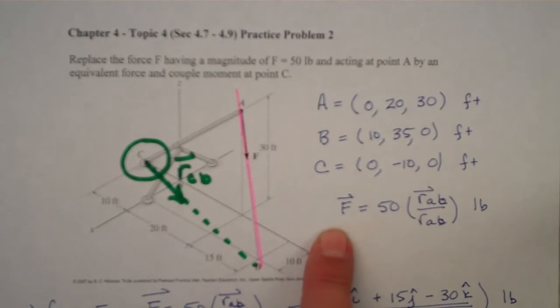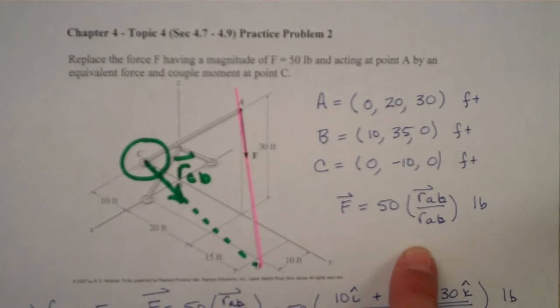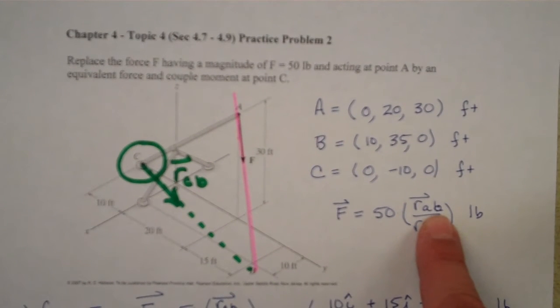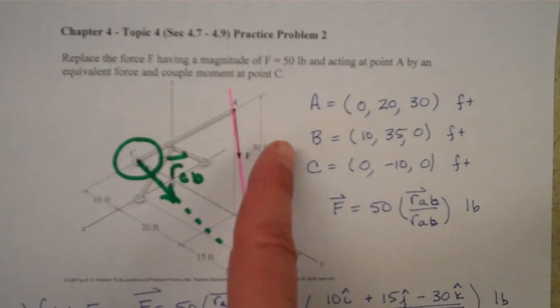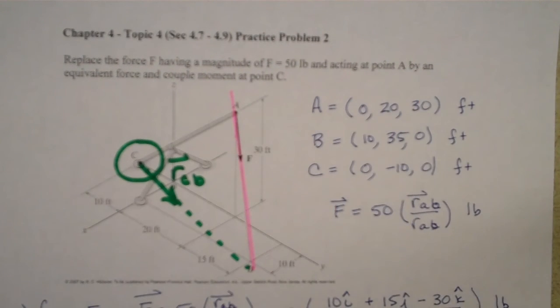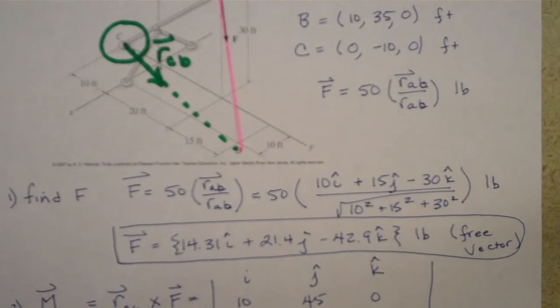For example, to find force F, we're going to need to take its magnitude times the unit vector or the position vector divided by its magnitude. So to find the position vector from A to B, I would simply take B minus A or 10 minus 0, 35 minus 20, and 0 minus 30. So let's in fact go ahead and find what that force vector looks like first.